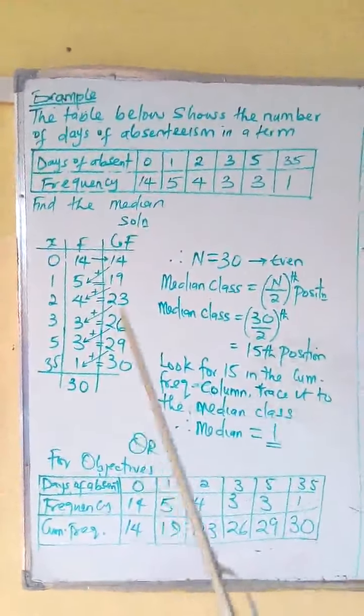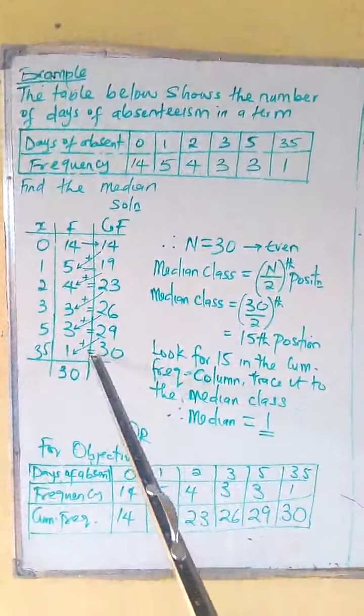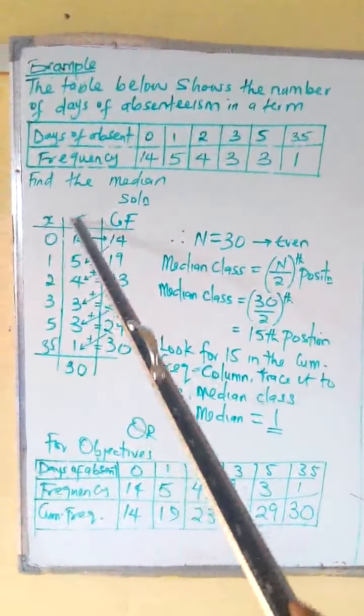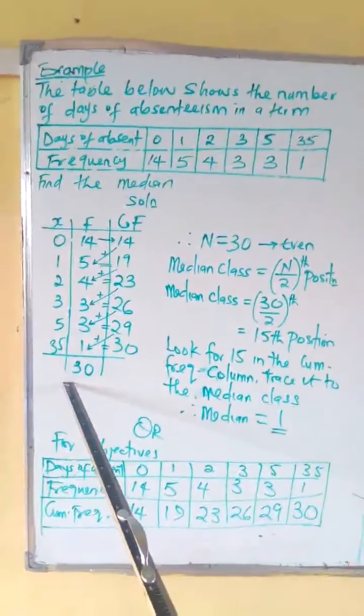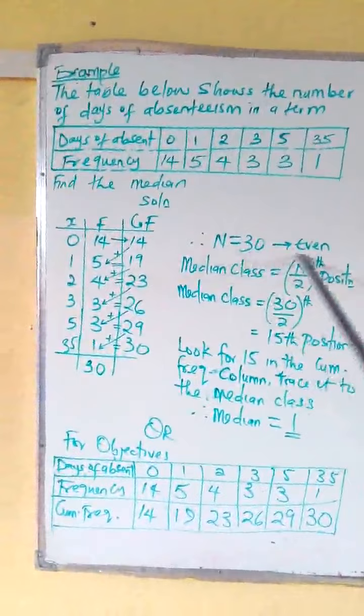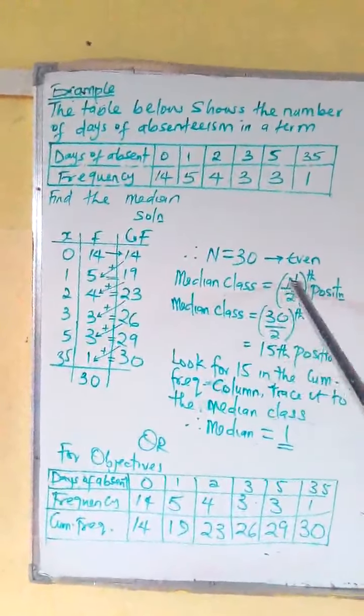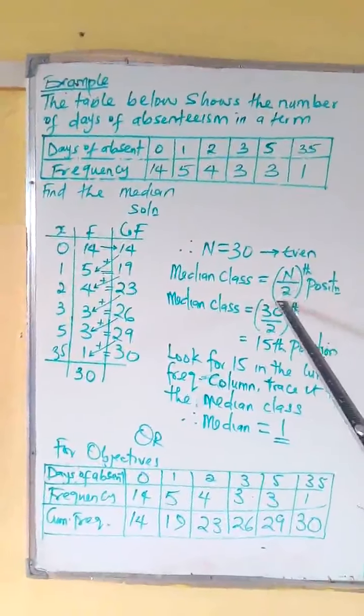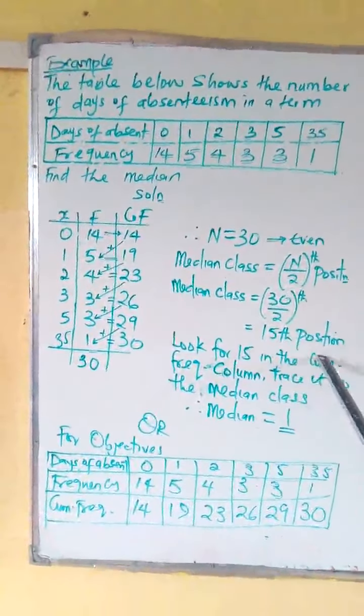Now, you also notice that our last cumulative frequency is our total frequency. So take note. If you look at it now, you discover that our total frequency is even. So what is our median class? You use this formula, n divided by 2. That will give us 15th position.